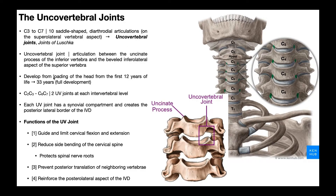The uncovertebral joint develops from loading of the head in the first 12 years of life. You're not born with an uncinate process — these actually develop as a result of loading. The head sits on top of the cervical spine, so the cervical spine bears the weight of everything above it. That loading triggers the formation of these uncinate processes projecting upward. Around eight years old we really see these uncinate processes; at 12, clefting begins to form; and ultimately the uncovertebral joints are fully formed around 33 years of age.